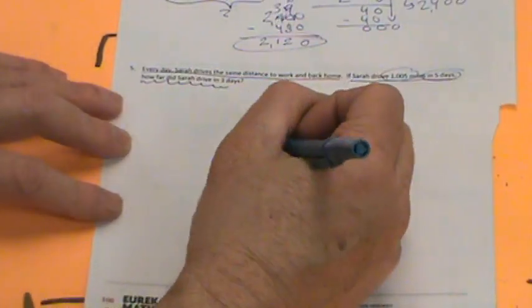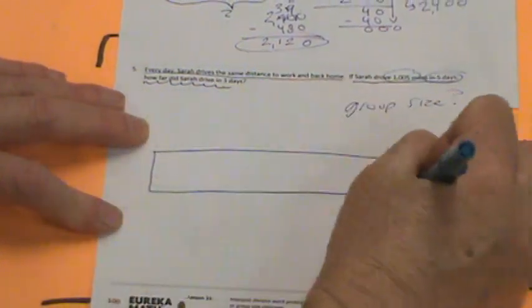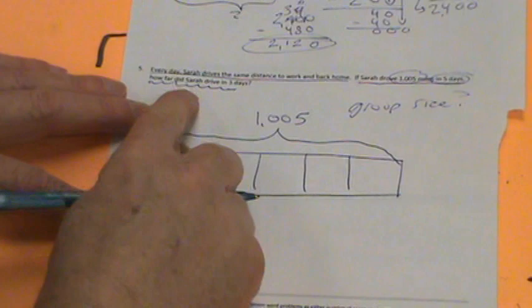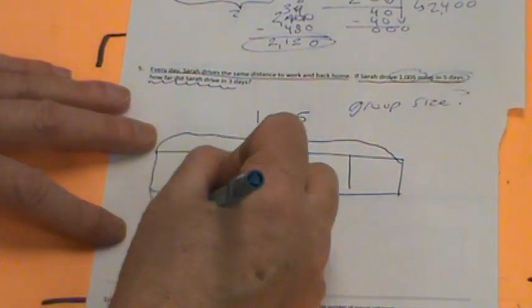So how many days? Let's set up what we don't know is the group size. Every day, Sarah drives the same distance to work and back home. If Sarah drives 1,500 miles in five days, how far does Sarah drive in three days? A lot going on here. Let's go back to this problem.